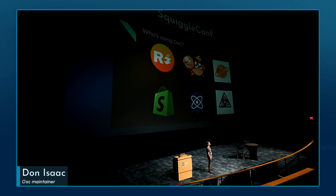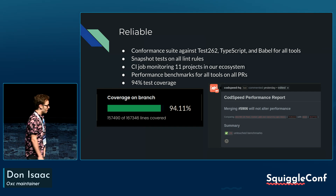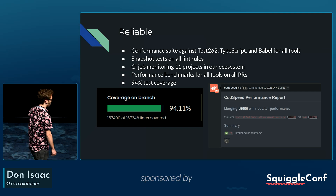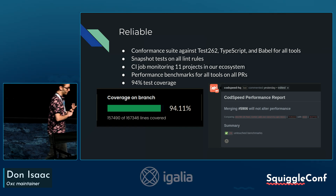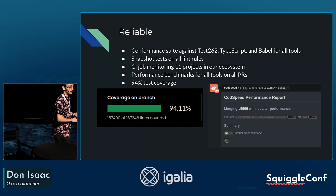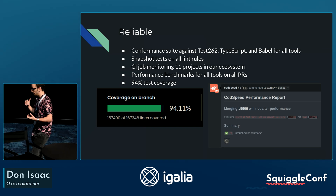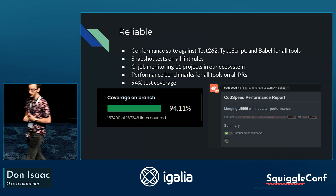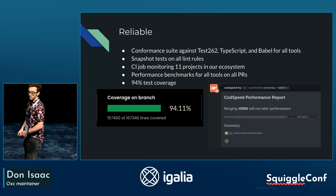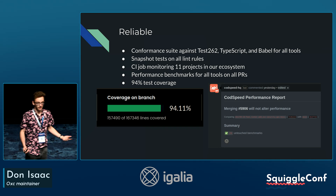So why would you want to use our tools? They're extremely reliable. Everything is tested until it's bulletproof. We have a comprehensive test suite with test 262, all of TypeScript's test cases, and all of Babel's test cases for each one of our tools. The linter is heavily tested, and we benchmark every PR to make sure there are no performance regressions at all. In total, we've got about 95% coverage.